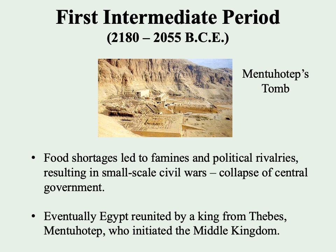The Old Kingdom comes to an end at some point — we're not entirely clear as to why. It could have been a number of factors: food shortages which might have led to famines, and there does seem to be indication of political rivalries resulting in small-scale civil wars. Eventually we have the collapse of central government and Egypt becomes politically fragmented, but is eventually reunited by a king from the city of Thebes, Mentuhotep, marking the beginning of the Middle Kingdom in 2055 BCE.